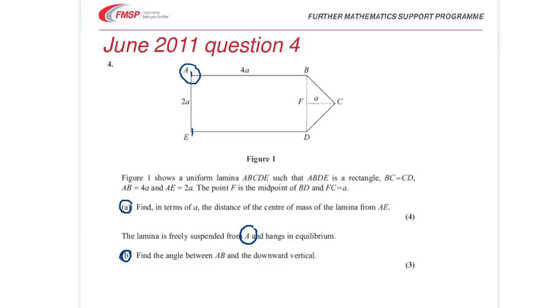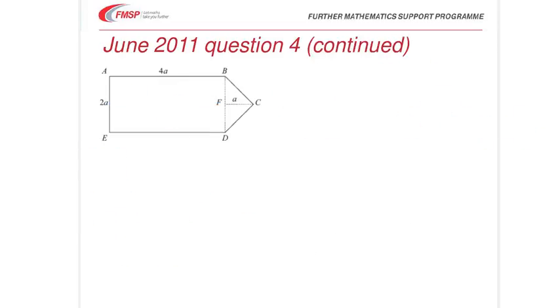So, now that we know the position of the centre of mass. That's going to be easy. Because, if it's suspended from A. We know the centre of mass is on this line here. And we know it's at a distance of 61A over 27. 61 over 27A.